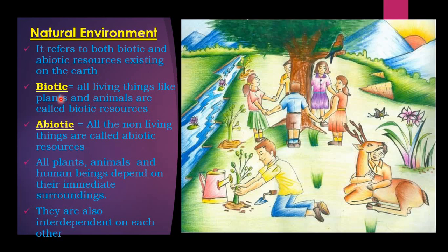So, biotic — what is biotic? Biotic means all the living things like plants and animals are called biotic resources. And what is abiotic? Abiotic means all the non-living things are called abiotic resources.